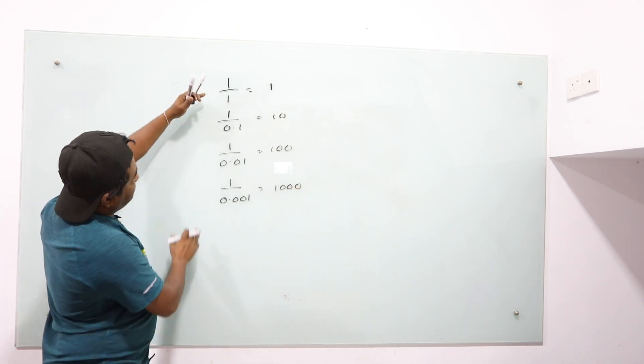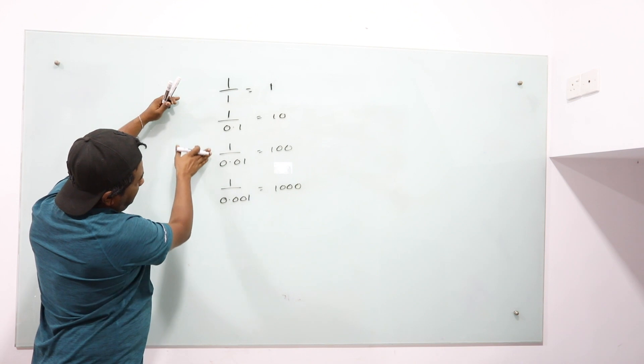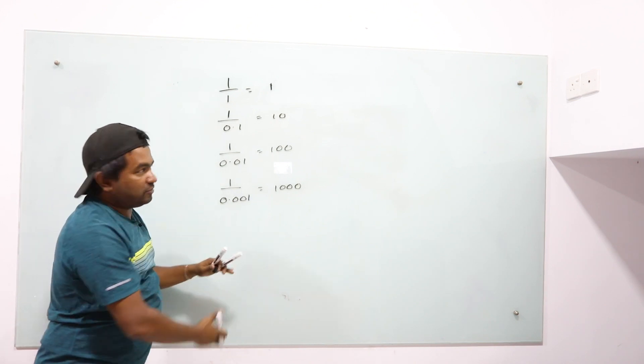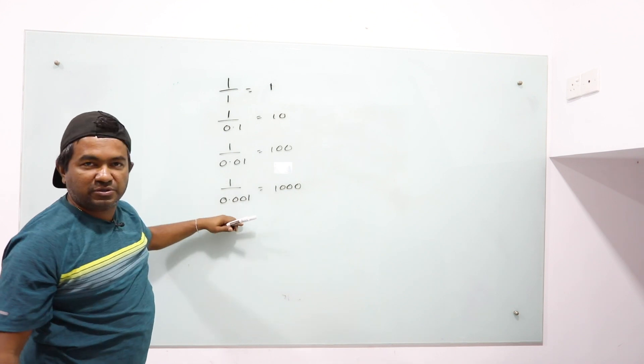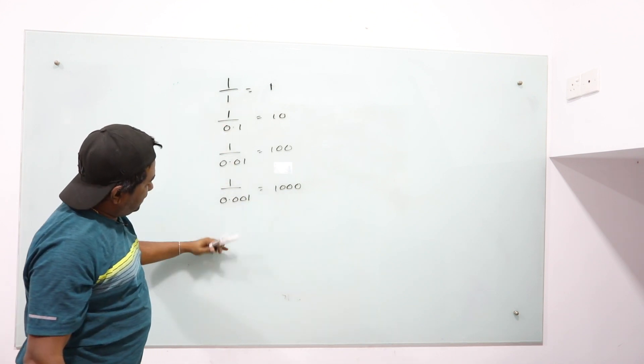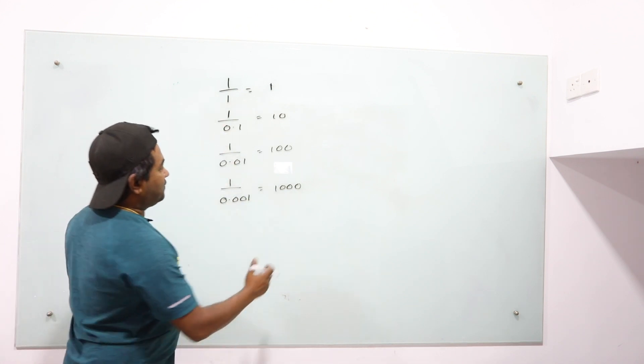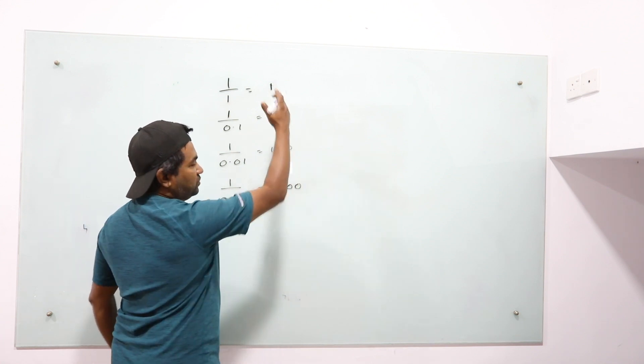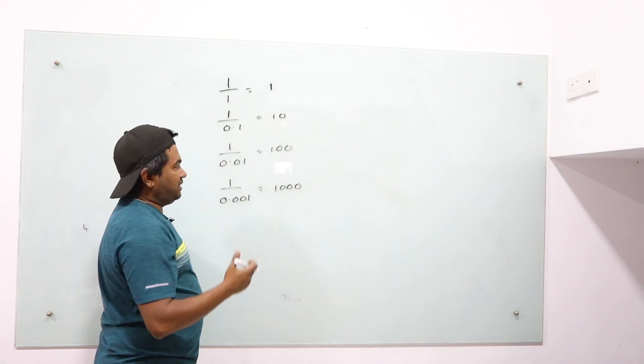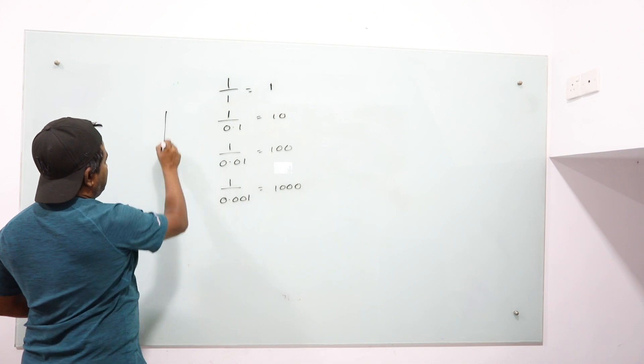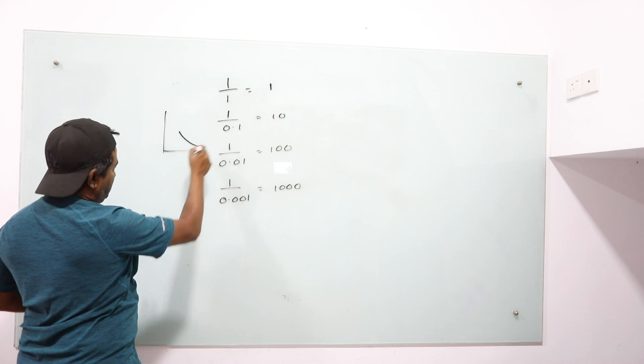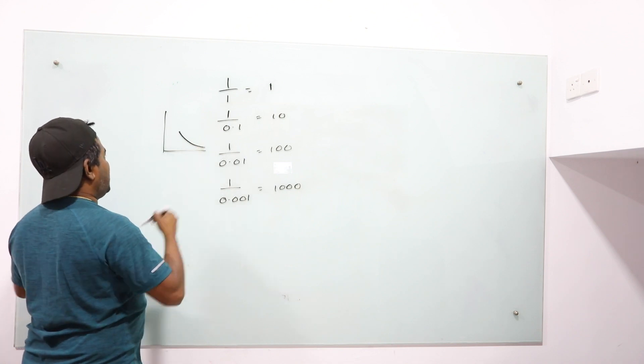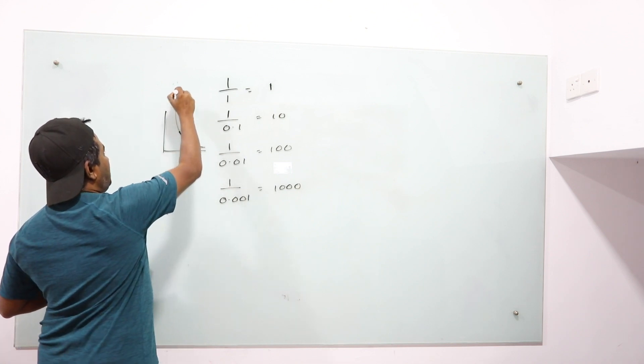So now, you can see when we're trying to reach 0: 1, 0.1, 0.01, 0.001. As we go towards 0, the value, the results, is going upward, right? So if you draw this, as we go towards 0, the answer is going upwards.